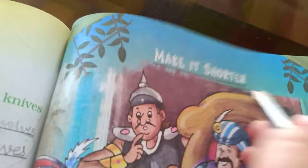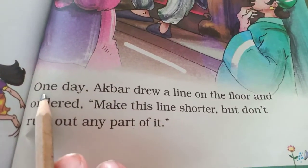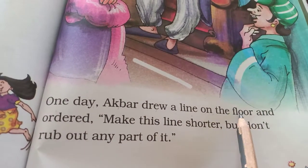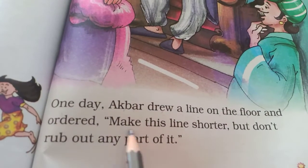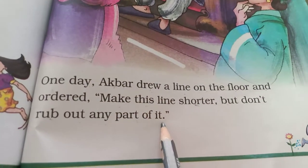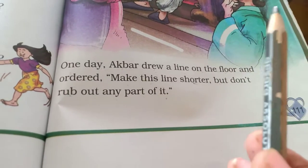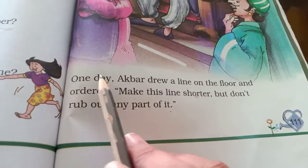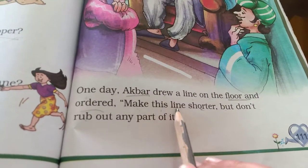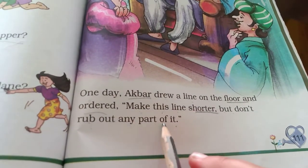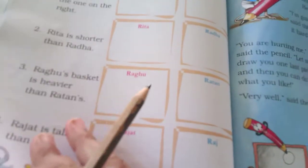Now today we are going to read a story. I will only do the reading today; the explanation will be in the next lecture. One day Akbar drew a line on the floor and ordered: 'Make this line shorter, but don't rub out any part of it.' The hard words that I have underlined, you don't need to write them yet — write them after I explain.